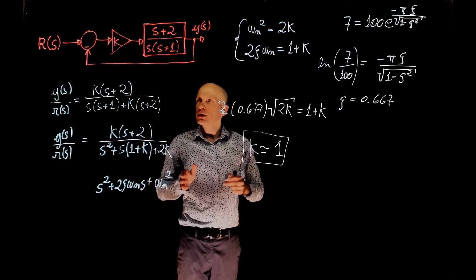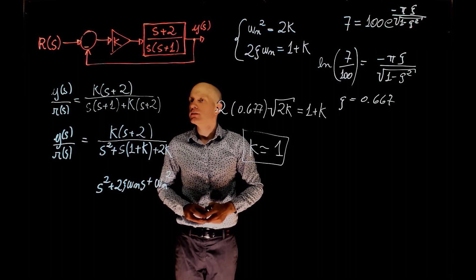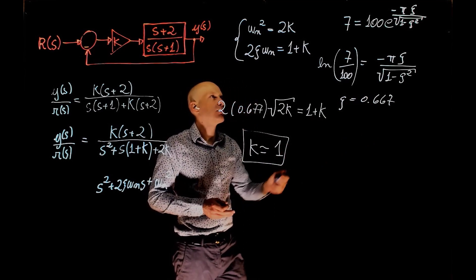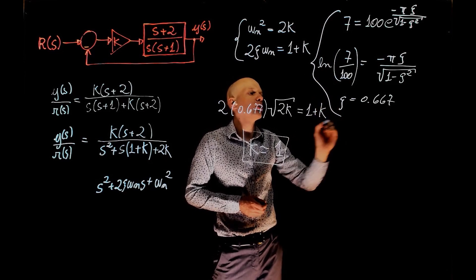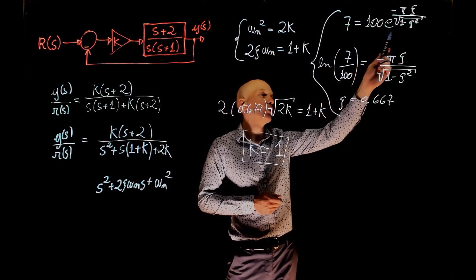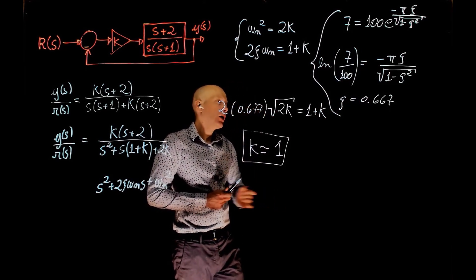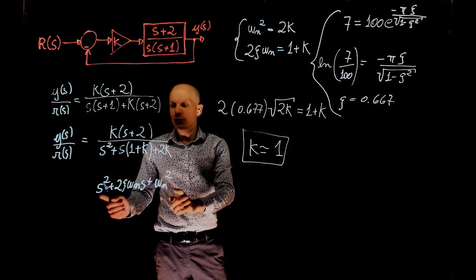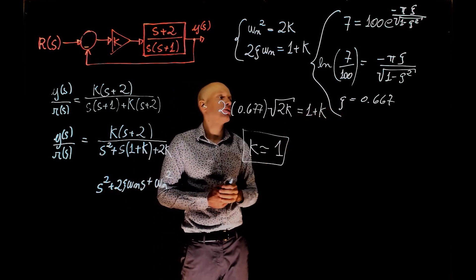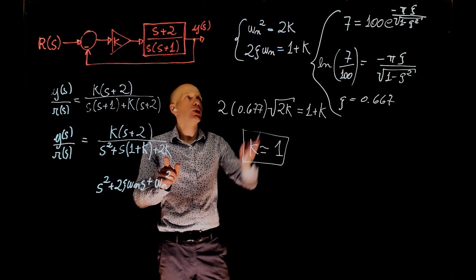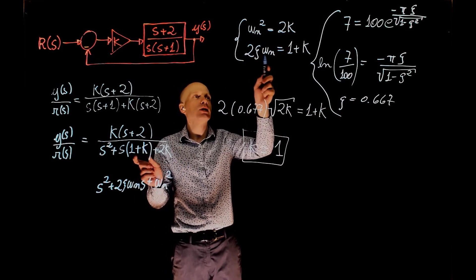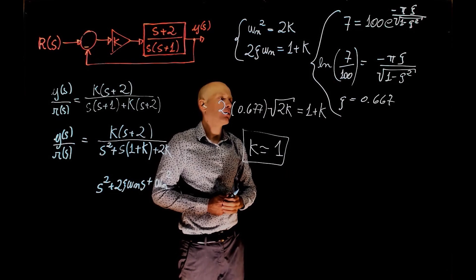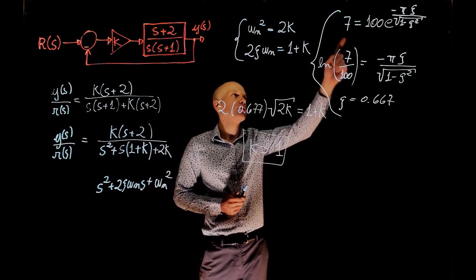Let's recap what we did. We want the percent overshoot to be 7%, which is the same as saying we want the damping ratio to be 0.667 — they are equivalent statements related through the percent overshoot formula. We then look at our transfer function, put it in standard form, and find the value of k that results in a damping ratio of 0.667. From the standard form we got ω_n² = 2k and 2ζω_n = 1 + k. Replacing ζ and solving for k gives the value that achieves the desired damping ratio and percent overshoot.